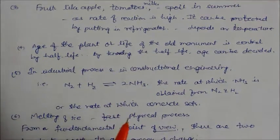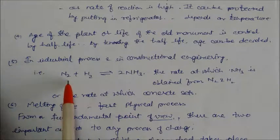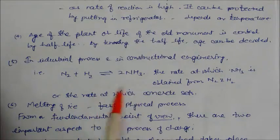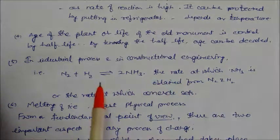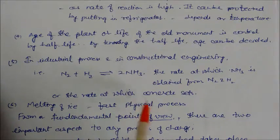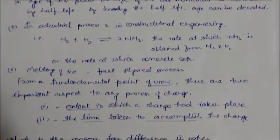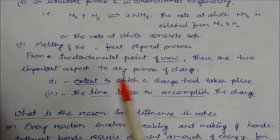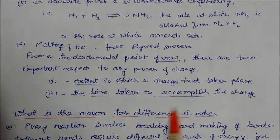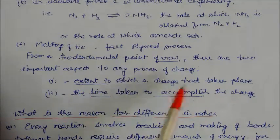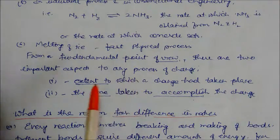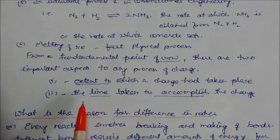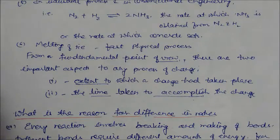In industry, chemical kinetics is also important. For example, nitrogen plus hydrogen forming ammonia under certain conditions — the rate at which ammonia is obtained from nitrogen and hydrogen can be found through chemical kinetics. The rate at which concrete sets can also be studied. From a fundamental point of view, there are two important aspects to any process of change: first, the extent to which a change has taken place, and second, the time taken to accomplish the change.